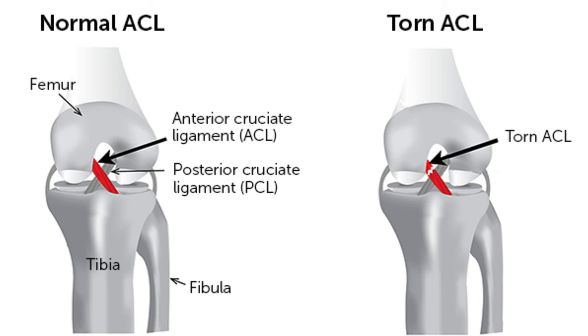The ACL of the knee joint is a ligament that attaches the femur or thigh bone to the tibia or shin bone inside the knee joint. Its function is to maintain stability of the knee joint so that the shin bone and thigh bone don't slip away from each other.